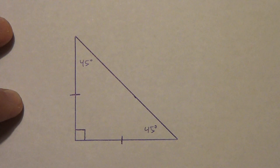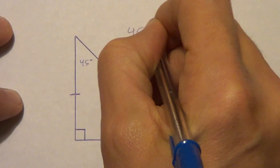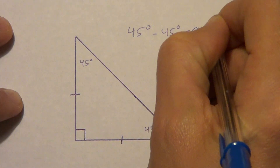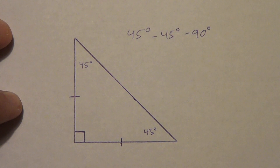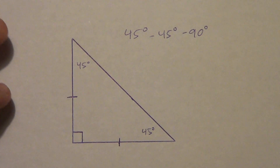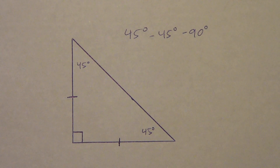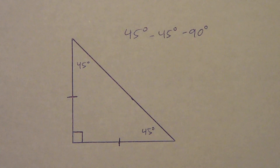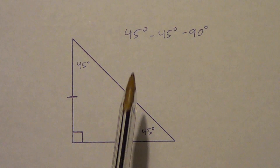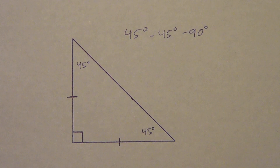We call this a 45-45-90 triangle. Any triangle with angles of 45-45-90 is similar to any other 45-45-90 triangle by the angle-angle similarity postulate, which we learned earlier. So if we come up with a set of side lengths that work for this triangle, we can use a scale factor or proportion to find any other side lengths in any 45-45-90 triangle at all.